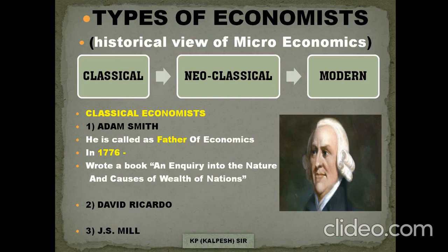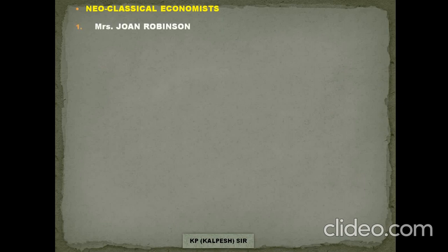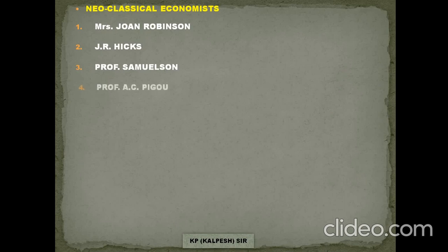To recap, classical economists are those who started writing on economics: Adam Smith, Sir David Ricardo, and J.S. Mill. Moving to neoclassical economists — the most important one is Alfred Marshall. Other neoclassical economists include Mrs. Joan Robinson from the UK, one of the notable female economists; J.R. Hicks; Professor Samuelson, who gave economics the title 'queen of economics'; and Professor A.C. Pigou.